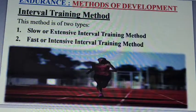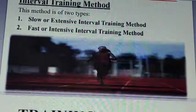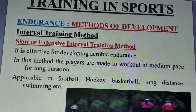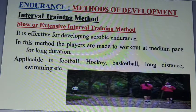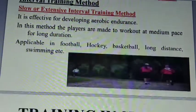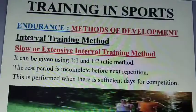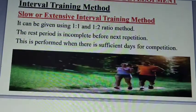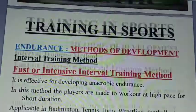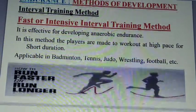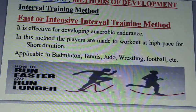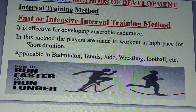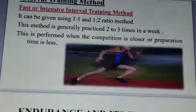Interval training may be slow or fast, giving us two types. For slow interval training — football, hockey — the ratio is 1-to-2 or 1-to-1, with incomplete rest before the next repetition but sufficient recovery for competition. For fast intensive interval training, explosive games like badminton, tennis, judo, and wrestling require this fast intensive method.